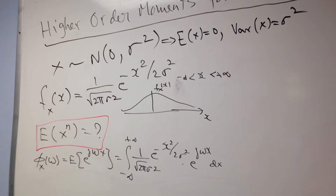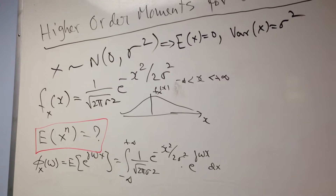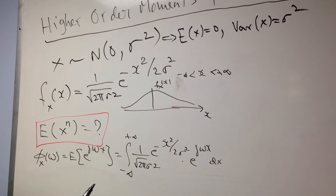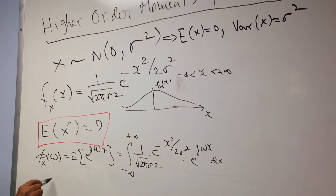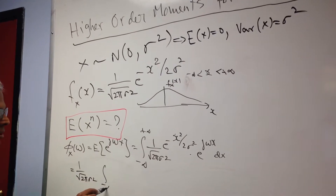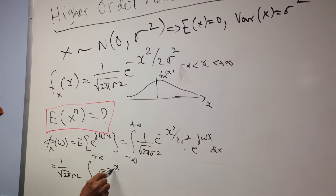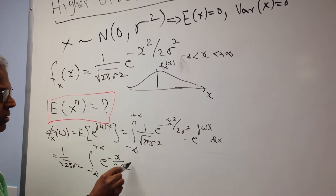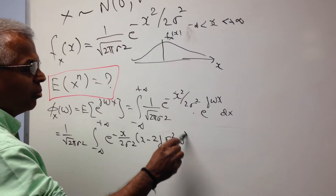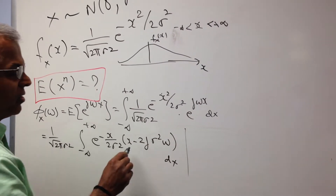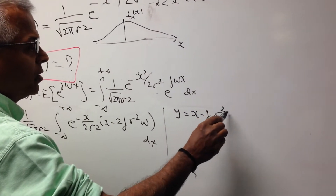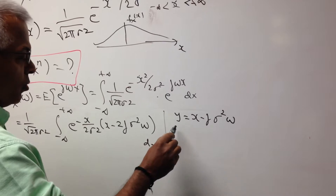The easiest thing is to start with the characteristic function, which is by definition the expected value of e raised to j omega X. This equals 1 over square root of 2 pi sigma squared, times the integral of e raised to minus x squared over 2 sigma squared, multiplied by e raised to j omega X dx. To simplify this, I'm going to make the substitution y equal to x minus j sigma squared omega.